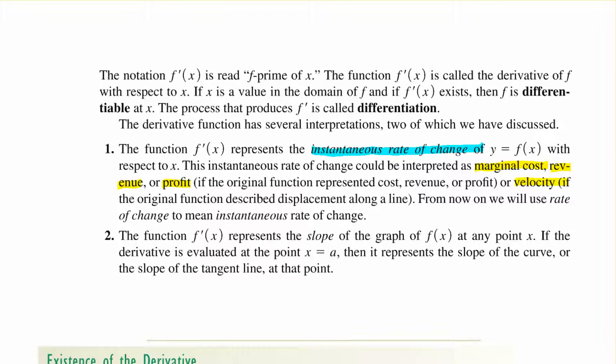A few things to remember. The notation f'(x) is read as f prime of x. The function f'(x) is called the derivative of f with respect to x. The process that produces f' is called differentiation. We've talked about that as the instantaneous rate of change, which could be interpreted as marginal cost, revenue, profit, or velocity if you're talking about position on a line. Rate of change means instantaneous rate of change.